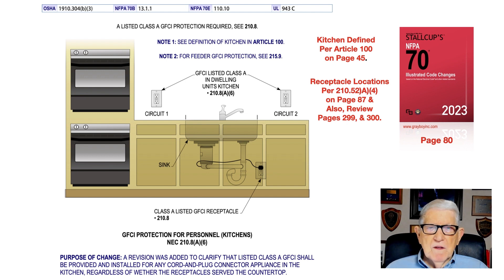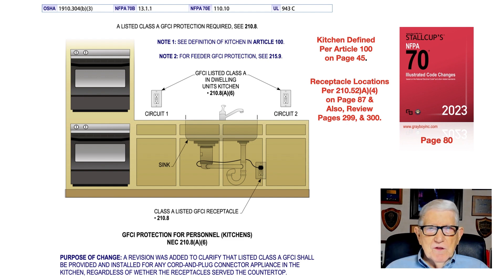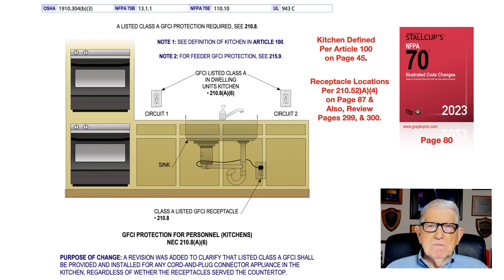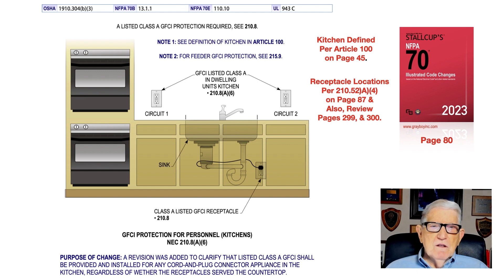This illustration deals with GFCI protection for personnel in the kitchen area. At the top of the illustration, a listed Class A GFCI protection is required in accordance with 210.8 A. Two small appliance circuits are required in the kitchen, with the kitchen definition found in article 100 on page 45.